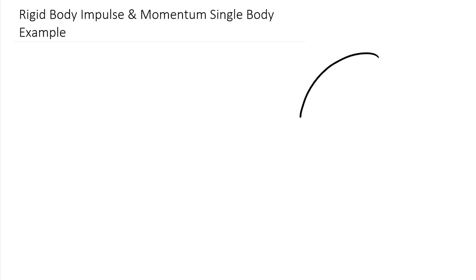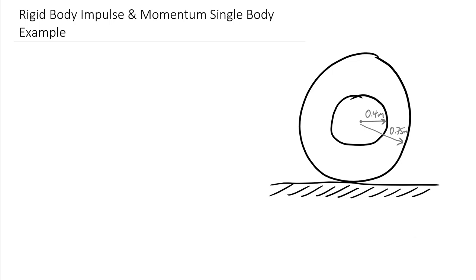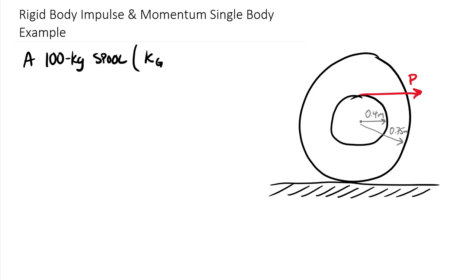The problem sketch shows a spool. The reason it's called a spool rather than a thin disk is that there are two different radii — an inner and an outer. The inner radius is 0.4 meters and the outer edge is 0.75 meters. This spool is being pulled by a cable wrapped around the inner portion, force P. The problem gives us a 100 kilogram spool with a radius of gyration k about the centroid, k_g or k-bar, equal to 0.35 meters.